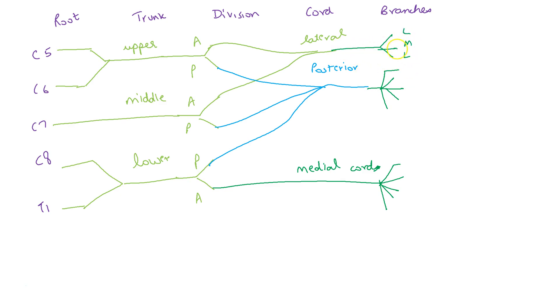So, the lateral cord gives LML that is lateral pectoral nerve, musculocutaneous nerve and lateral root of median nerve.